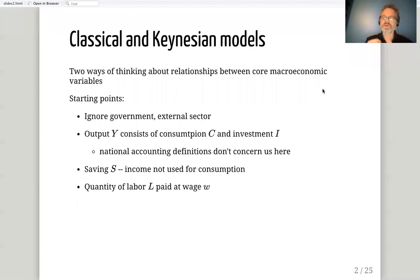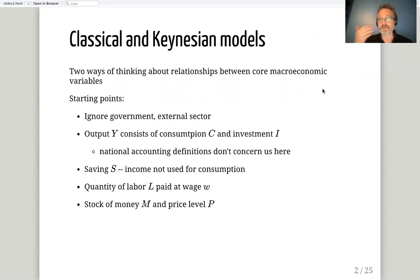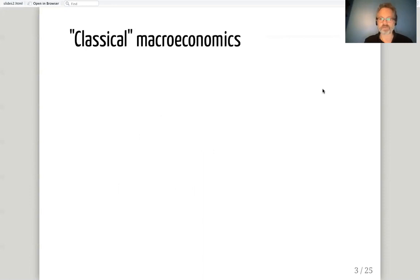We also have labor — a homogeneous quantity supplied by households in return for a price, the wage. In these models, we should think of the wage as a real wage — a basket of consumption goods that is the price for one unit of labor. We also have a money stock and a price level, the price per unit of output. These are the building blocks for both models.